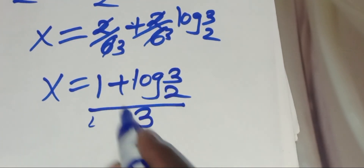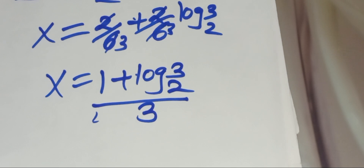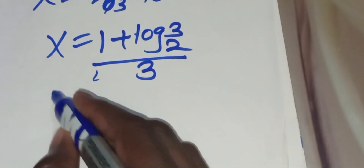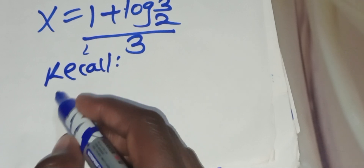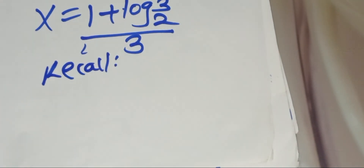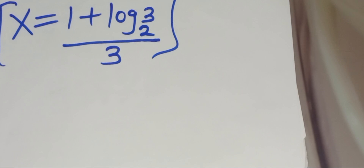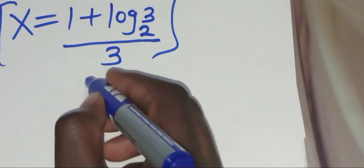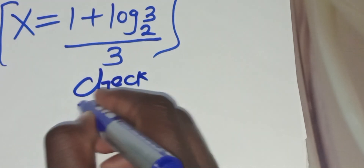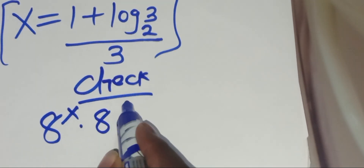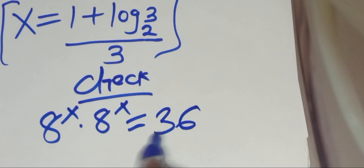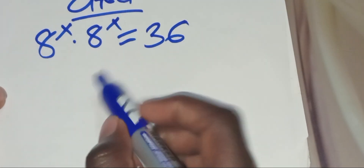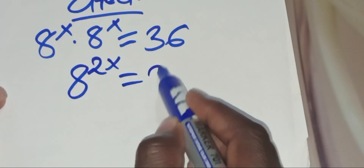This is the value of x. Let's check if this value of x actually satisfies the equation. We have that 8 to the power x multiplied by 8 to the power x should give us a value of 36. Let's substitute: 8 to the power x multiplied by 8 to the power x is the same thing as 8 to the power 2x, which is equal to 36.